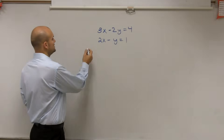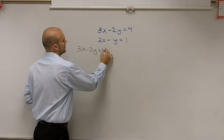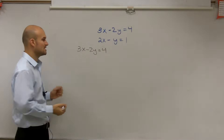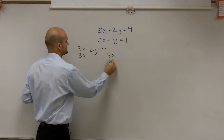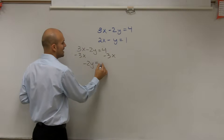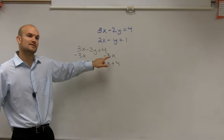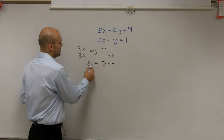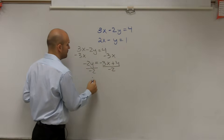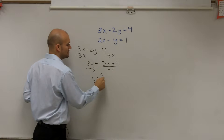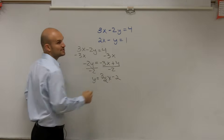So, the first thing I'm going to do is set up each equation and solve for y so it's in mx plus b form. To get y by itself, I first need to subtract 3x on both sides. So, I get negative 2y equals negative 3x plus 4. We like to write the negative 3x before the 4. Then, I need to divide by negative 2. So, I have y equals positive 3 halves x, since negative 3 divided by negative 2 is positive 3 halves, and 4 divided by negative 2 is minus 2.